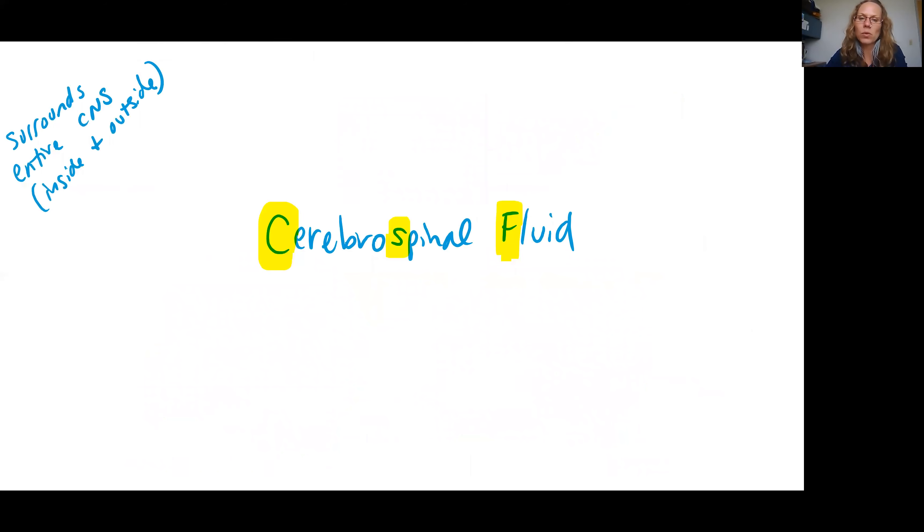Next let's talk more about the cerebrospinal fluid, which we can abbreviate as CSF. This is going to be surrounding the entire central nervous system, so that means brain and spinal cord. We see the CSF both inside the center of the CNS and on the outside of the CNS.